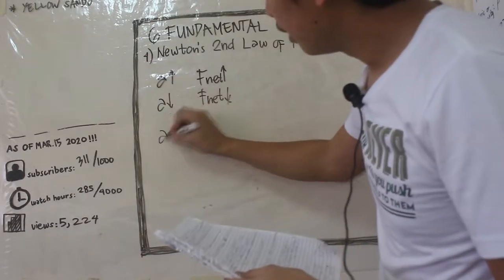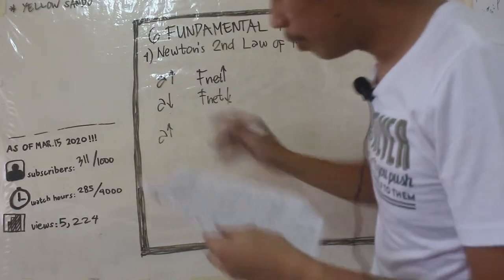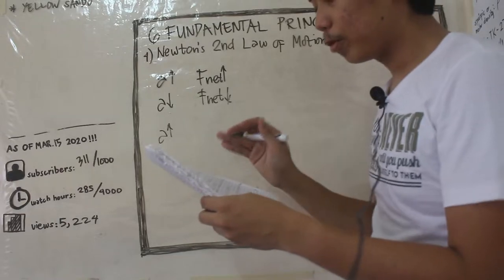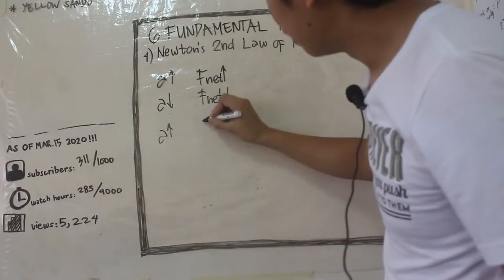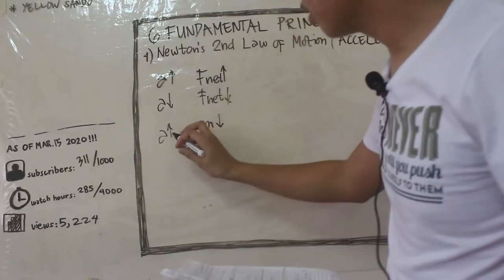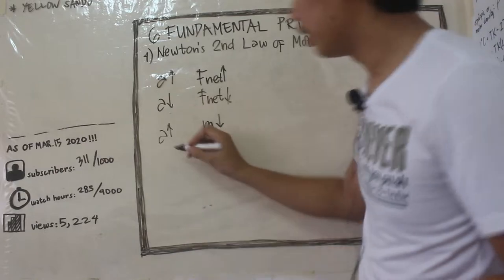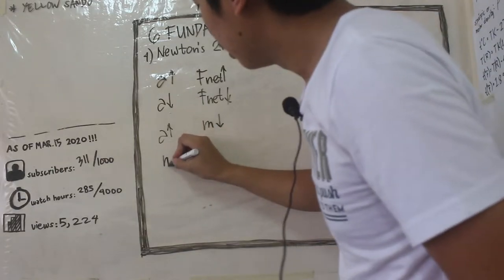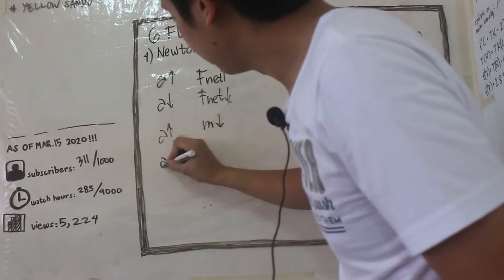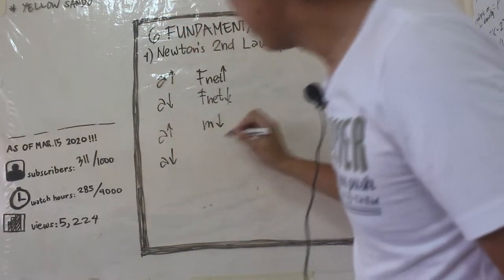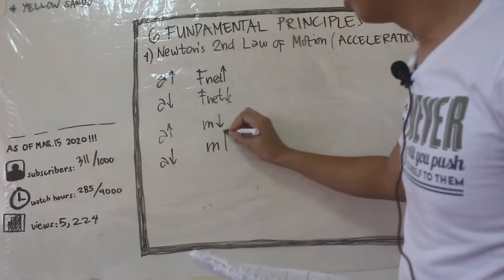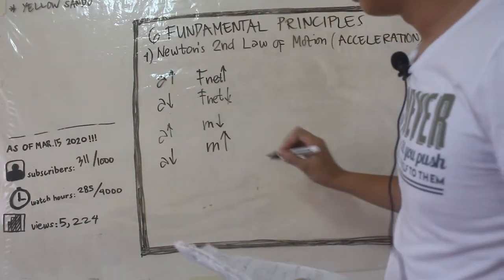And it is inversely proportional to the mass of the object. Kung tataas yung acceleration, ibig sabihin maliit yung mass. Tsaka kung mababa yung acceleration, ibig sabihin malaki yung mass.